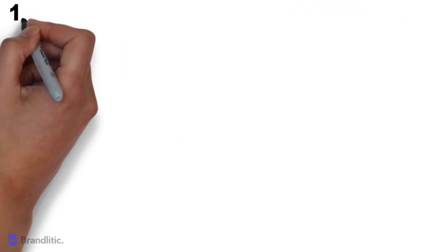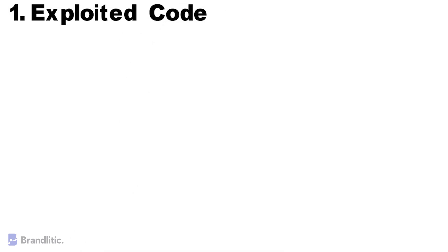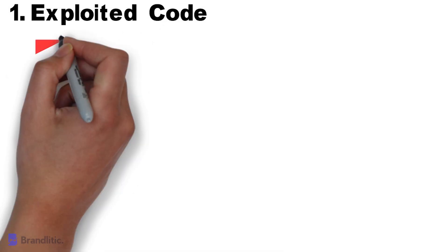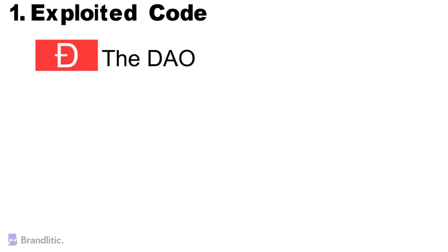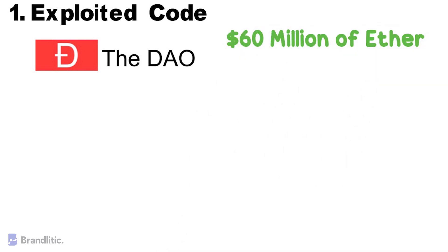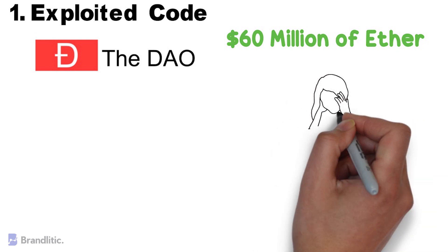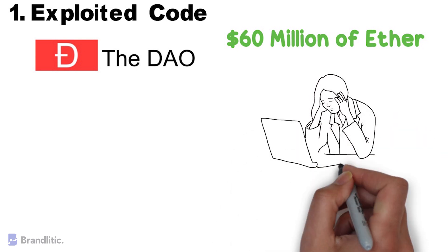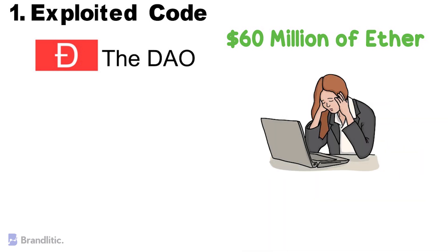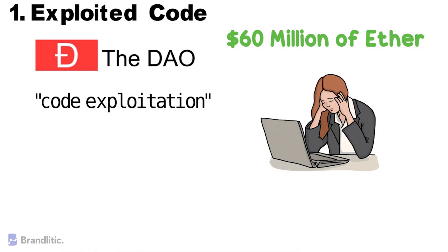Number one: exploited code. This event showcased privacy and security issues of decentralized autonomous organizations, or DAOs. Programmers were fixing a code malfunctioning issue on the system when an unknown attacker began draining the DAO of Ether collected from the sale of its token. More than 60 million dollars of Ether was stolen in just a few hours, accounting for almost one third of the DAO's total value. The code exploitation served as the primary culprit.